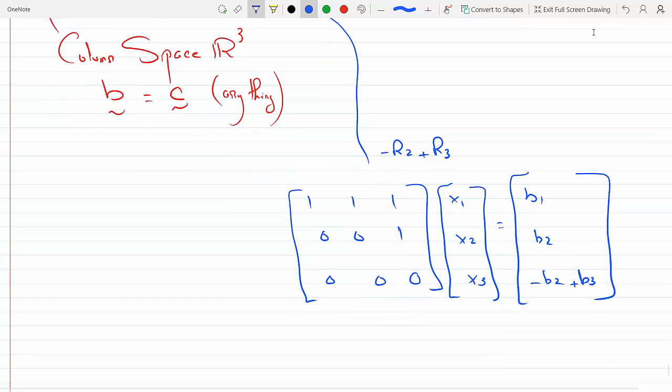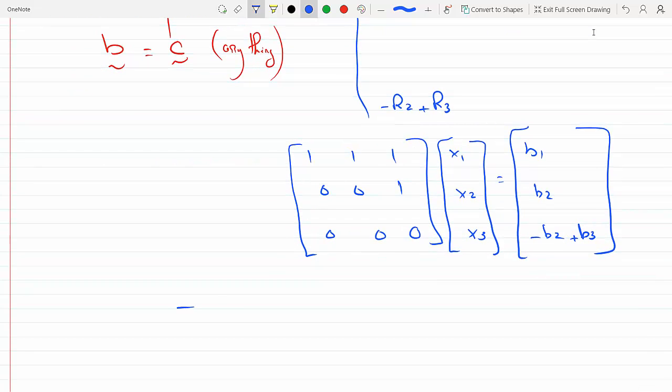And we can easily see that the last one has to equal 0, so minus b2 plus b3 equals 0, which makes b2 equal b3. So the system has a solution for b2 equals b3.